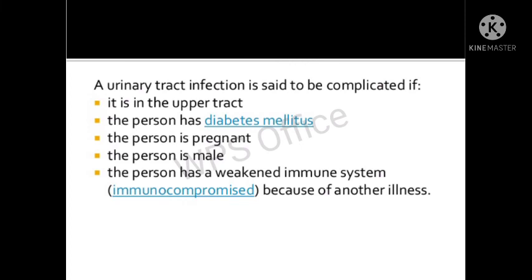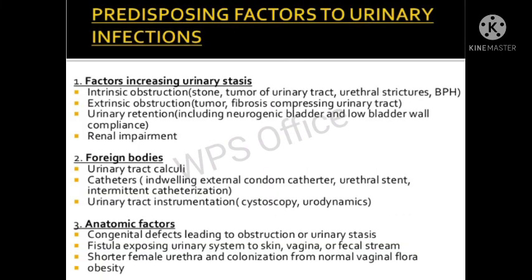A UTI is said to be complicated if it involves the upper tract — that means if it involves the kidneys. It is also more complicated when the person has diabetes mellitus, when the person is pregnant, when the person is male, or when the person has a weakened immune system.